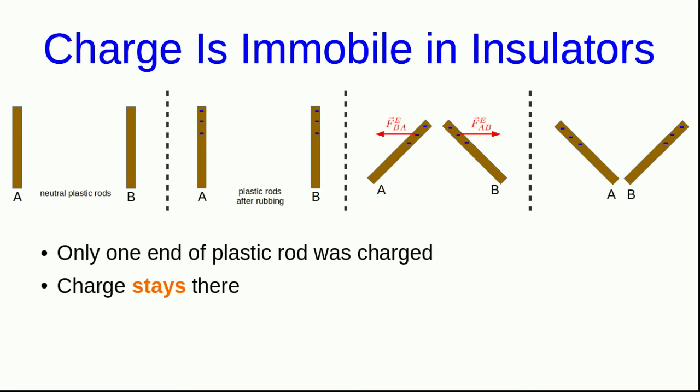And not only was it at one end where we had produced it, but it stayed there. And so this tells us that charge is not mobile in plastic. In other words, plastic is an insulator.